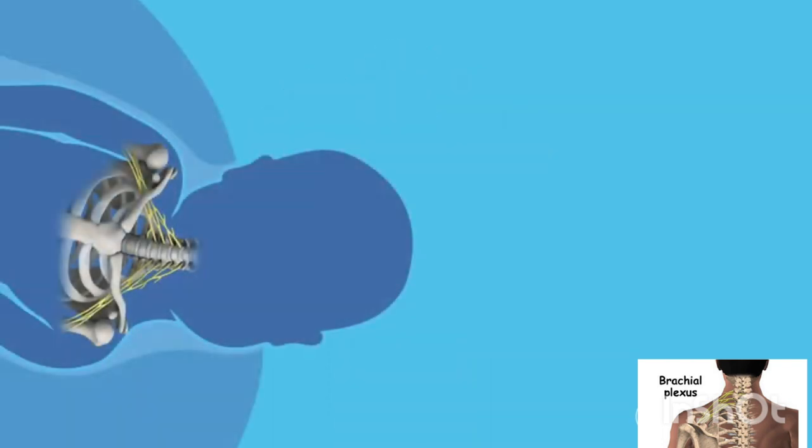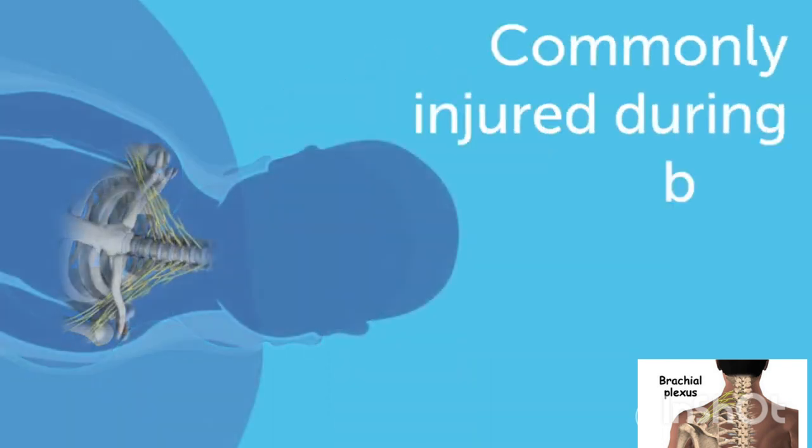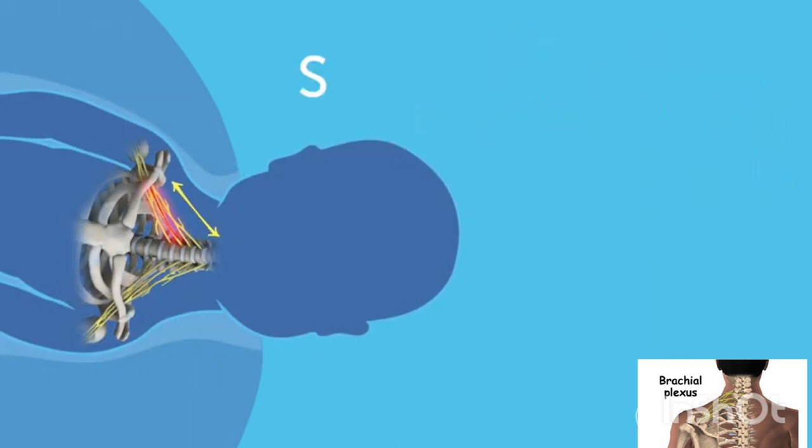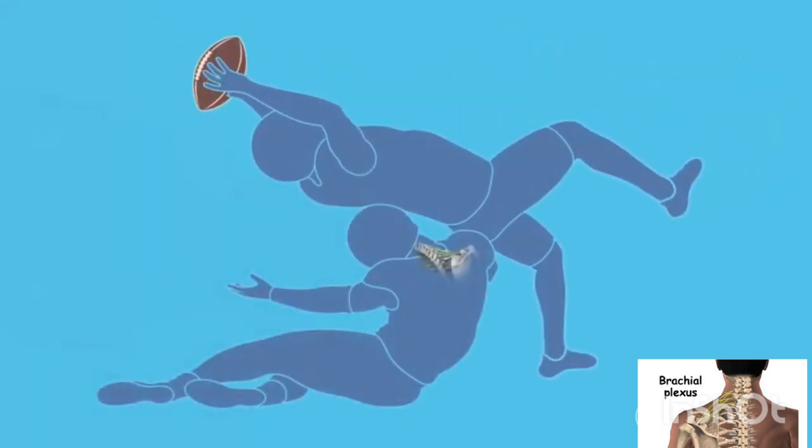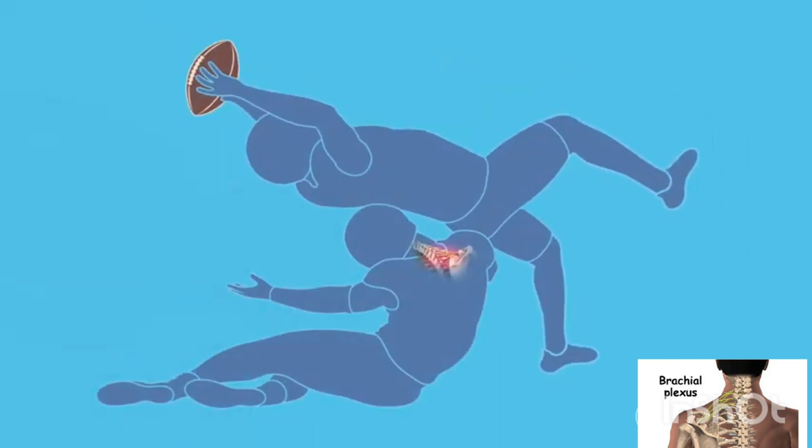The nerves of the brachial plexus are most commonly injured during birth, if the baby's neck is stretched going through the birth canal, called shoulder dystocia. But the brachial plexus can also be injured at any time in our lives that our neck is overstretched or injured through impact, such as during tackle football.